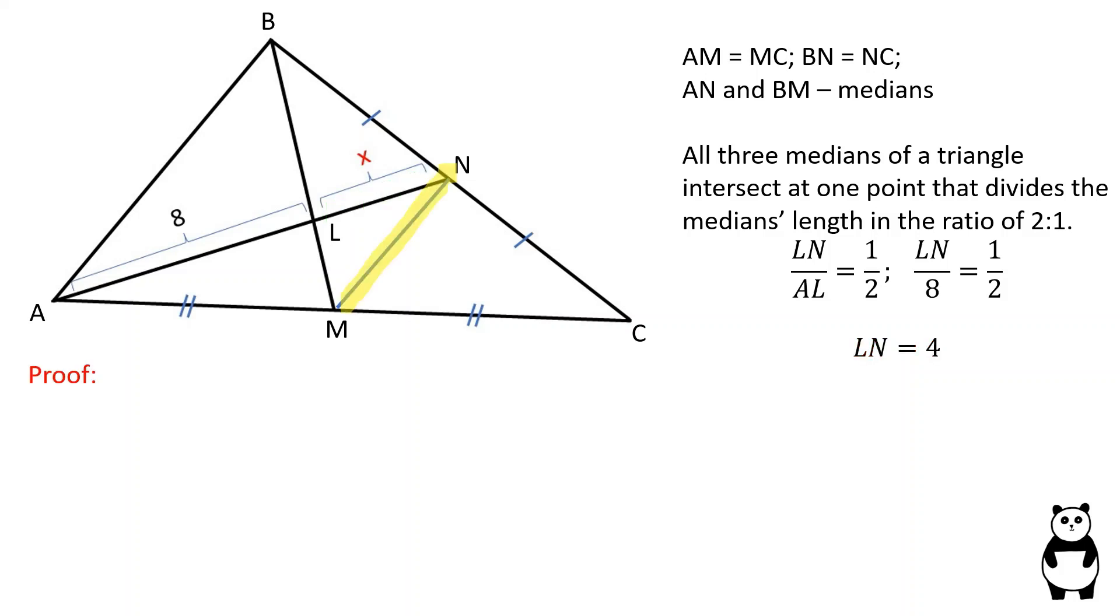Let's prove this formula. Let's connect point M to point N. MN is a mid-segment of the triangle ABC because AM is equal to MC and BN is equal to NC. A triangle mid-segment is parallel to the third side of the triangle and is half of the length of the third side.